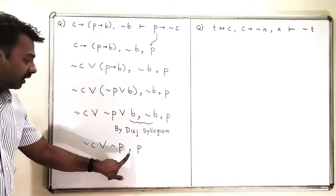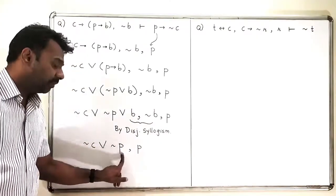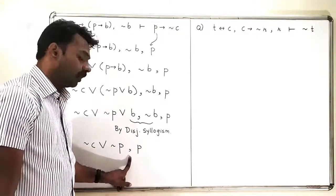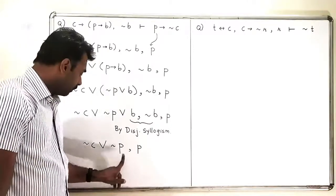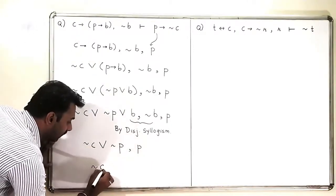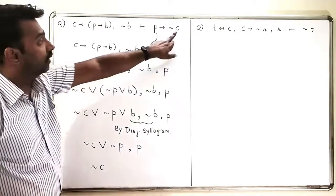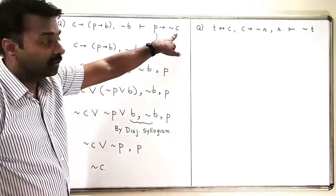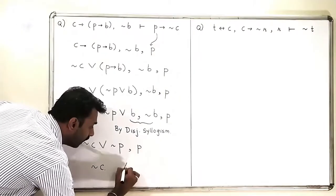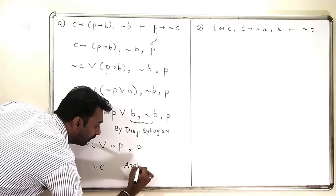Again I will apply disjunctive syllogism, and this P will also go away. So I am left with only negation C. This is our conclusion, negation C. So this means that this argument is valid.